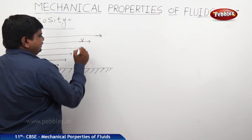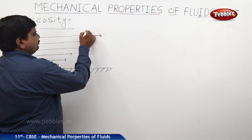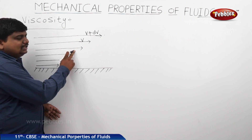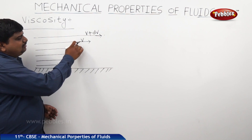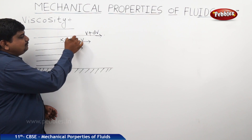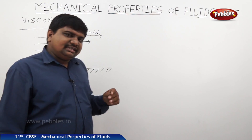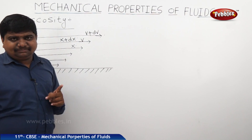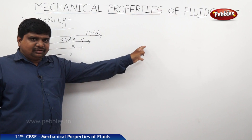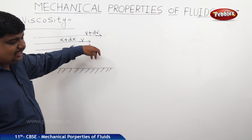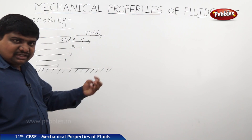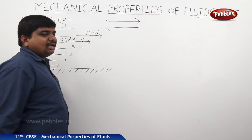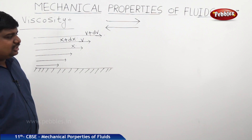If a layer is moving with velocity v, the top layer is moving with velocity v plus dv. If one layer has travelled a distance x, the topmost layer has travelled a distance x plus dx. Viscosity opposes this relative motion between the layers — the top layer wants to move forward, but the adjacent layer drags it backward.